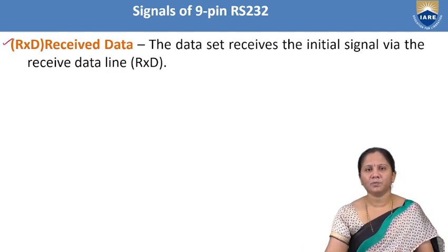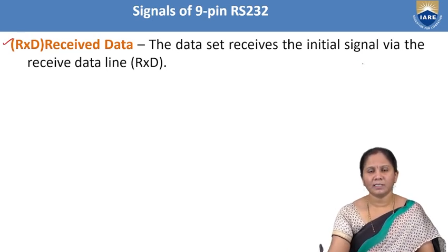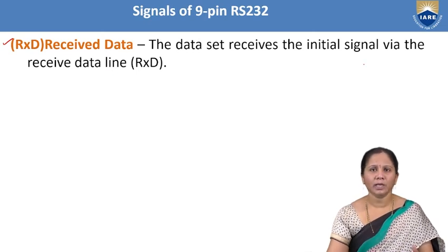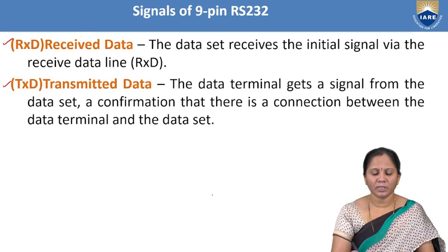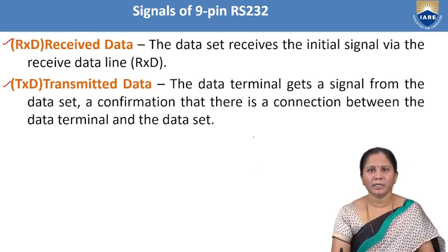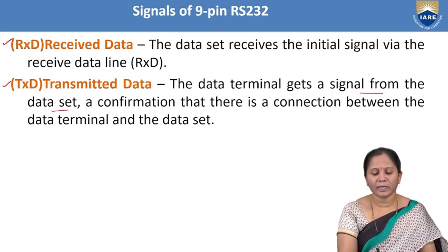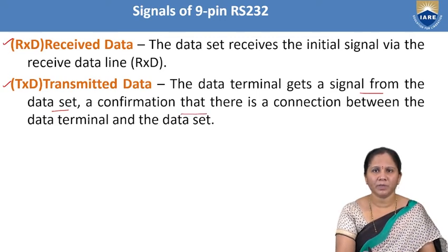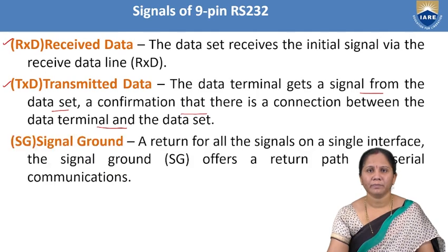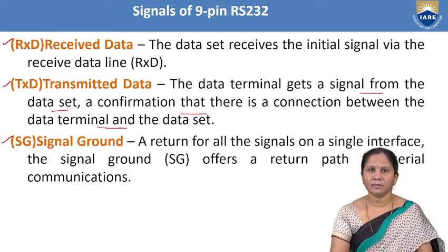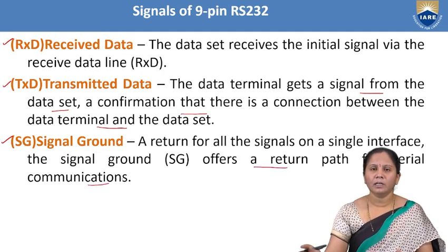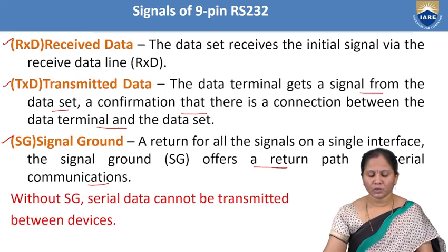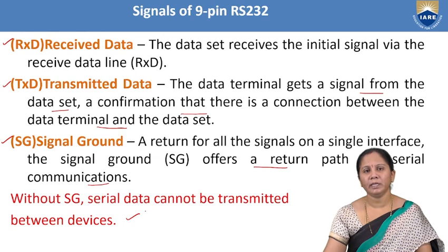The remaining three normal signals are: RXD (receiver data) — when asserted, it indicates the receiver is ready to receive data; TXD (transmit data) — confirms there is a connection between the data terminal and data set; and SG (signal ground) — the signal ground for the RS-232 cable, which offers a return path for signal communication. Without signal ground, serial data cannot be transmitted between DTE and DCE devices.